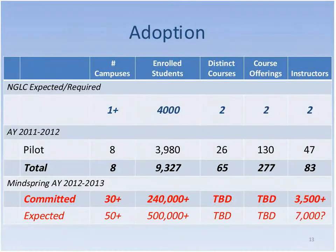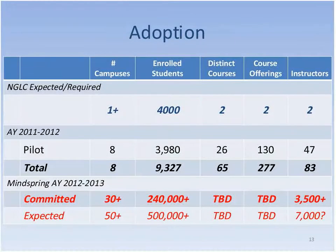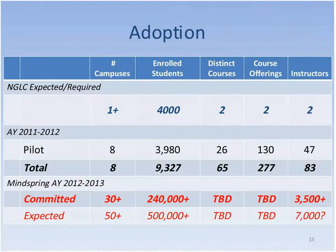Here are hard numbers from Kaleidoscope. NGLC expected at least one campus to serve 4,000 students with at least two distinct courses. Kaleidoscope scaled so fast it outran its own assessment budget — more faculty wanted to participate than could be accommodated within the rigorous assessment framework. The project was split into a controlled pilot and an open participation track. Total involvement was more than 9,300 students, about 4,000 in the controlled pilot, with 277 offerings of 65 distinct courses by 83 instructors — all in well under 12 months.